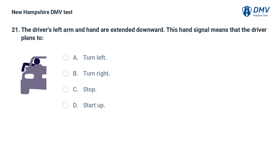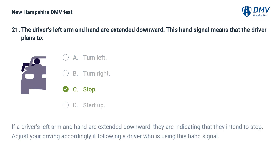The driver's left arm and hand are extended downward. This hand signal means that the driver plans to stop. Adjust your driving accordingly if following a driver who is using this hand signal.